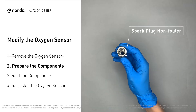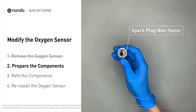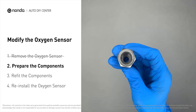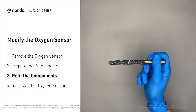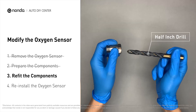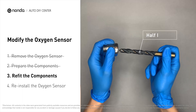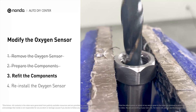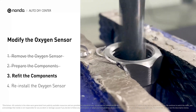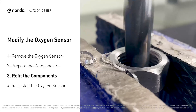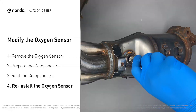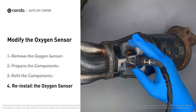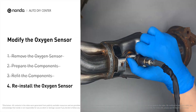First, get a spark plug non-fouler, and then use a half inch drill to refit it. By doing this, the spark plug non-fouler now has enough space to fit into the oxygen sensor. Put them together and put them back on the catalytic converter.